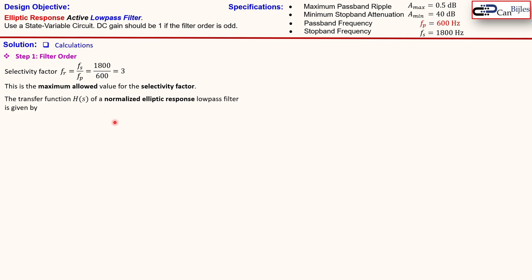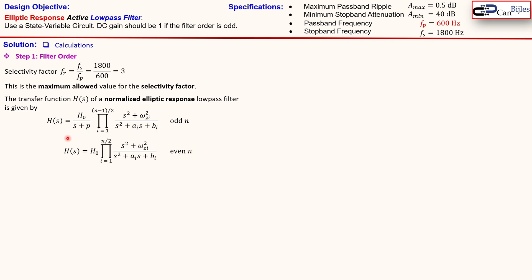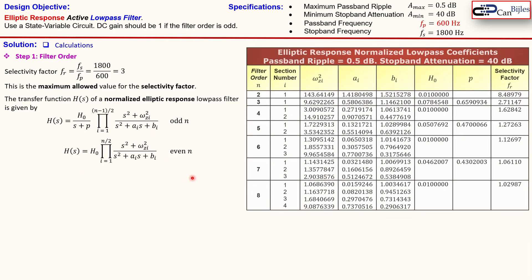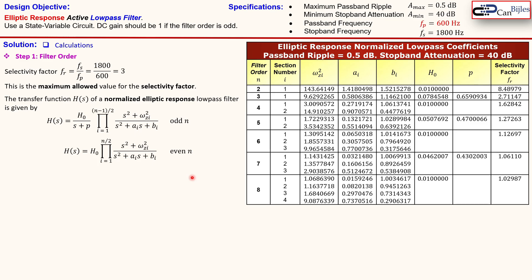The transfer function of an elliptic response low pass filter is given in general form for odd order (1, 3, 5, 7) and for even order as a different expression. We need a specific filter table for the elliptic response with a passband ripple of 0.5 dB and attenuation of 40 dB. That table also shows parameters such as the zero frequency — all in normalized values.